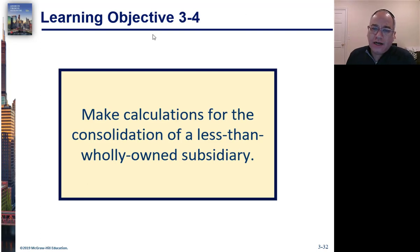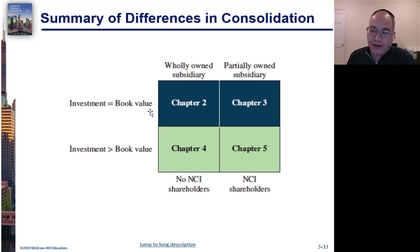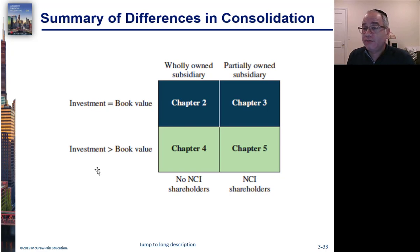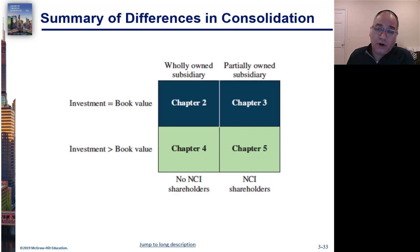Learning Objective 3-4: make calculations for the consolidation of a less-than-wholly-owned subsidiary — in other words, where there's a non-controlling interest. We covered Chapter 2 with wholly owned subsidiaries. Now we're doing a partially owned subsidiary where the investment equals book value. Chapters 4 and 5 will cover situations where there's a differential — where the investment exceeds book value. Chapter 4 covers a wholly owned sub with a differential, and Chapter 5 covers a partially owned subsidiary with a non-controlling interest.